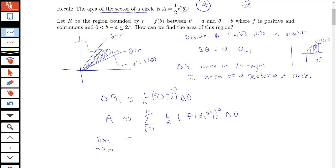And say, well, the limit as n goes to infinity of my sum is actually going to be equal to my area. So I'd have this limit of my sum up to n of one-half f of theta i star squared delta theta.